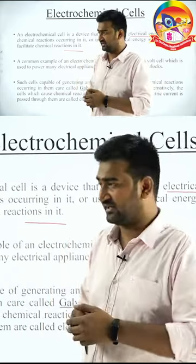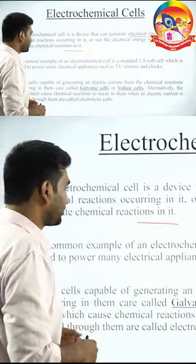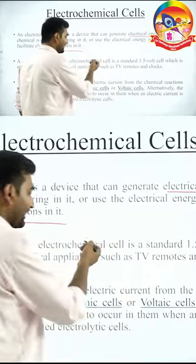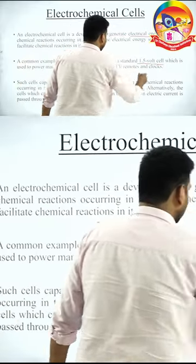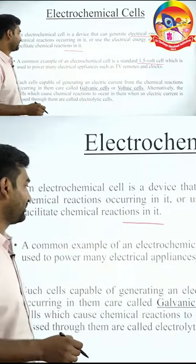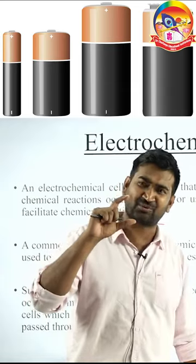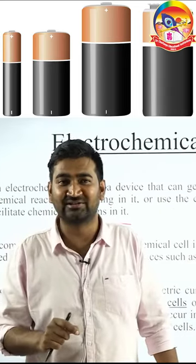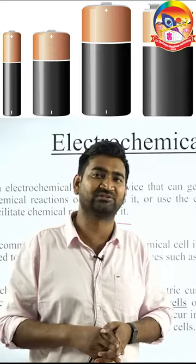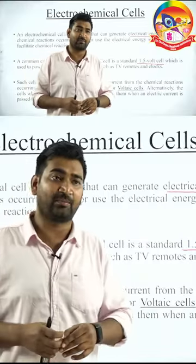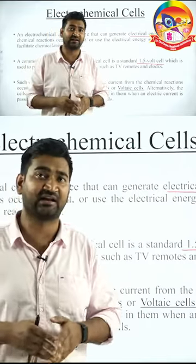A common example of an electrochemical cell is the galvanic cell — specifically the standard 1.5 volt cell, which is used to power many electrical appliances like TV remotes and clocks. You might have seen these small cells of 1.5 volts, 1.2 volts, or 1.1 volts available in the market. In these, the chemical energy is getting converted into electrical energy.